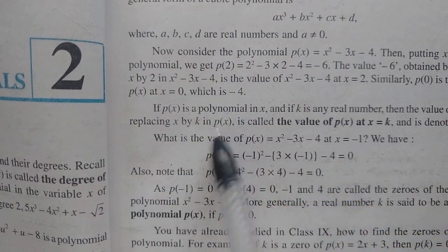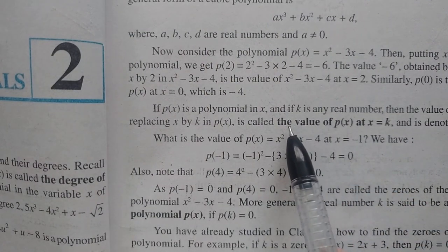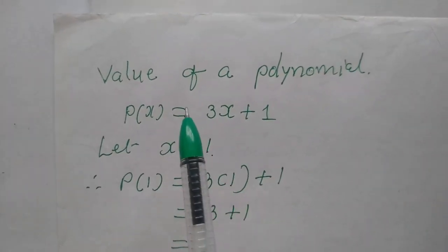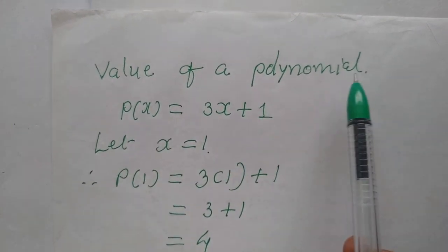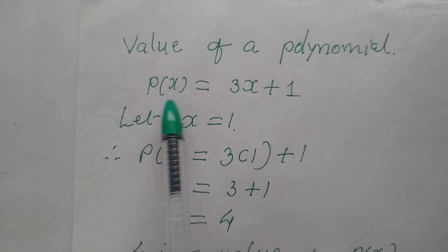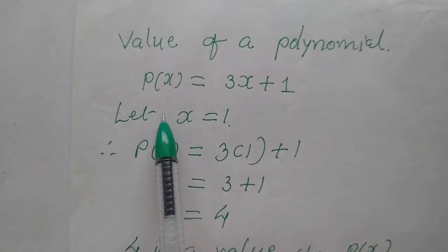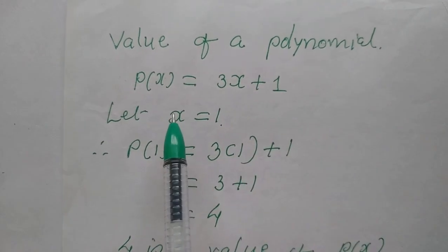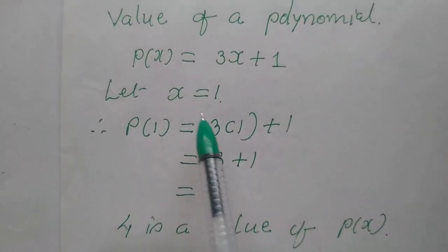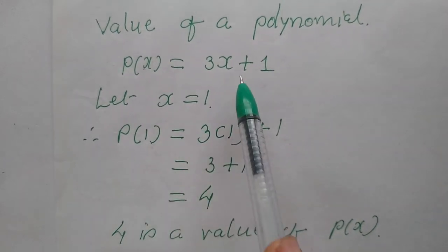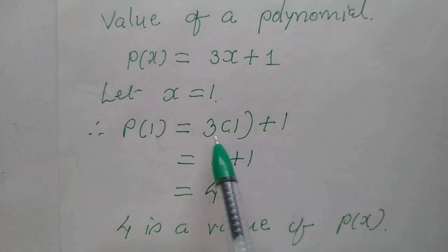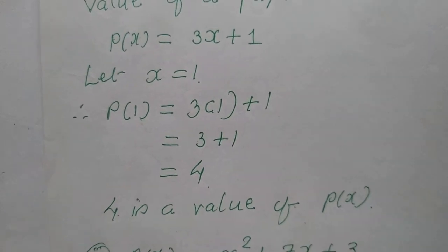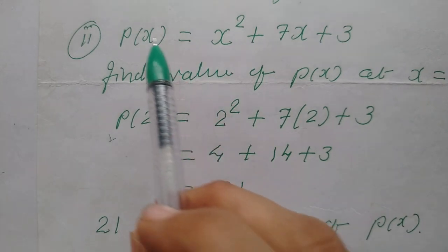Now, something new is being explained here — the topic is the value of p(x). Now children, the next topic is value of a polynomial. We have one linear polynomial p(x) equal to 3x plus 1. Let x equal to 1. The question is: find the value of this polynomial at x equal to 1. So in place of x write 1: 3 into 1 plus 1 equals 4. So 4 is the value of p(x).